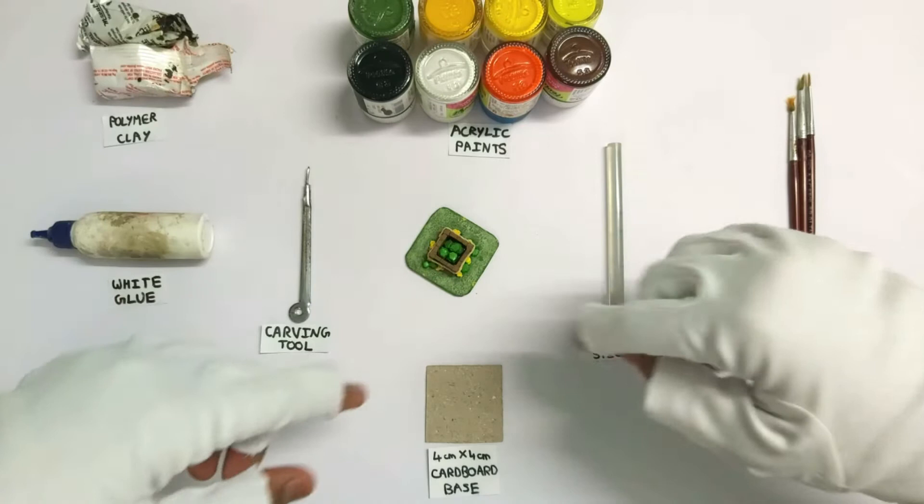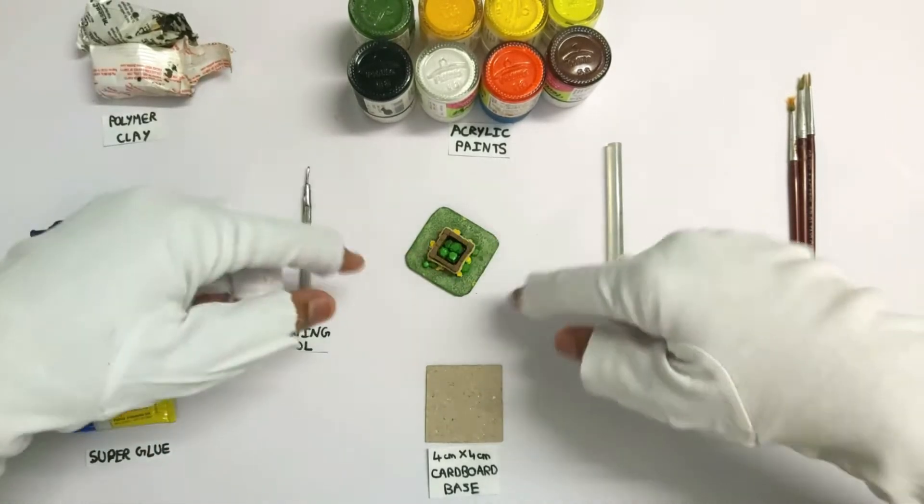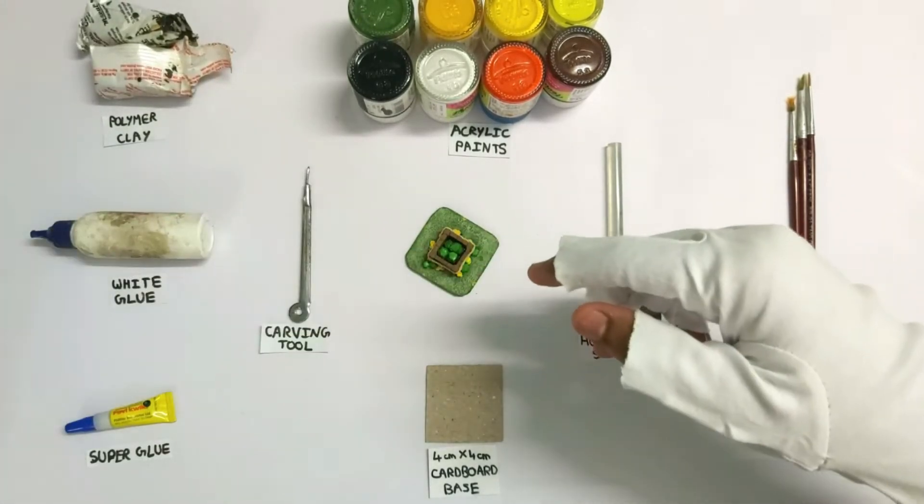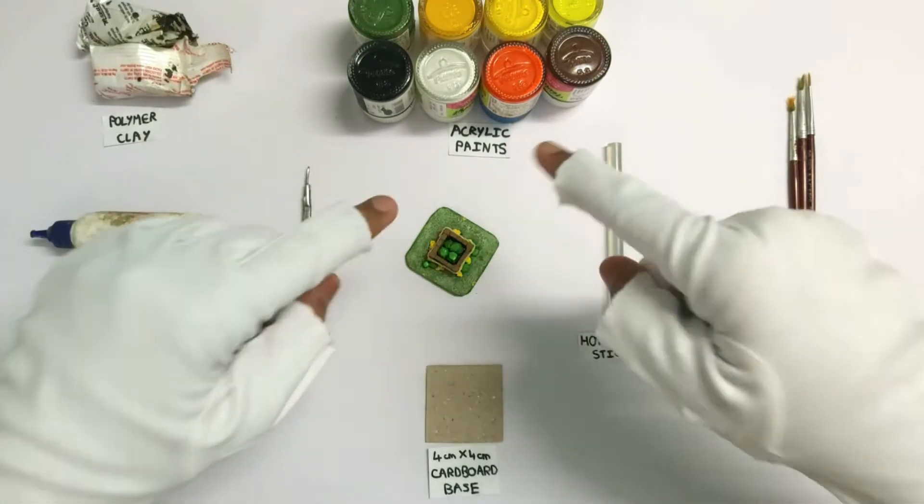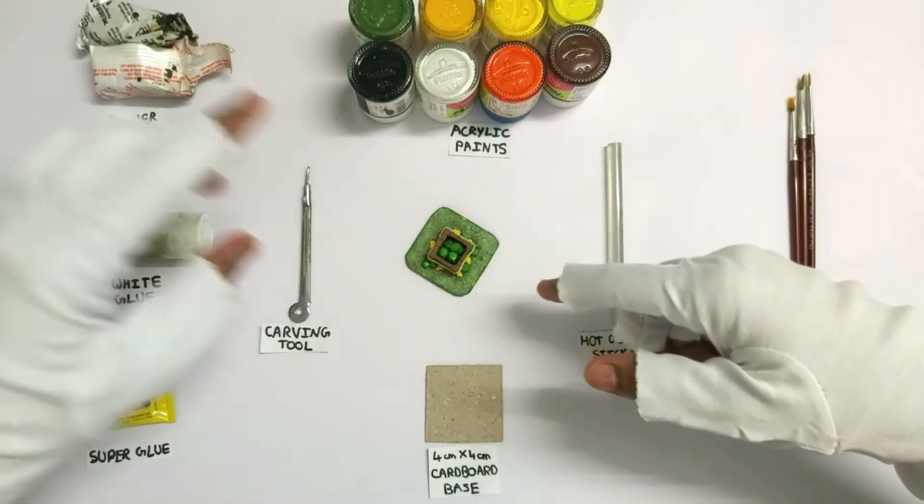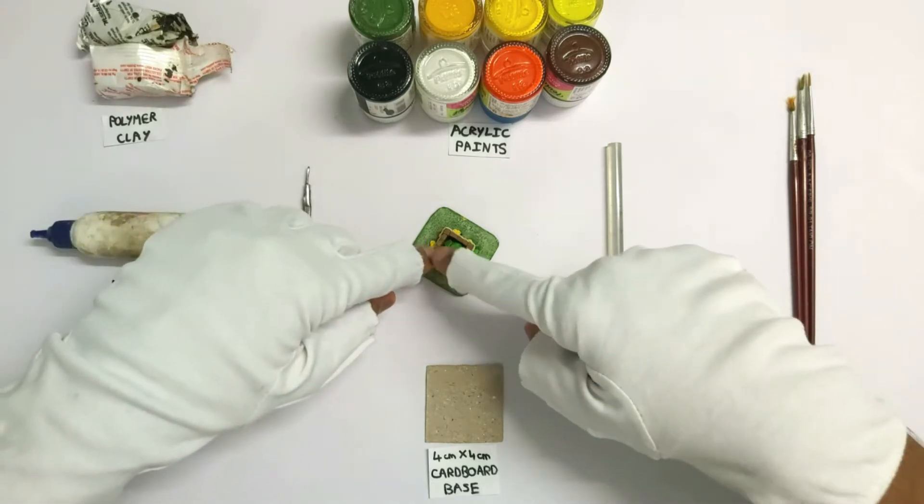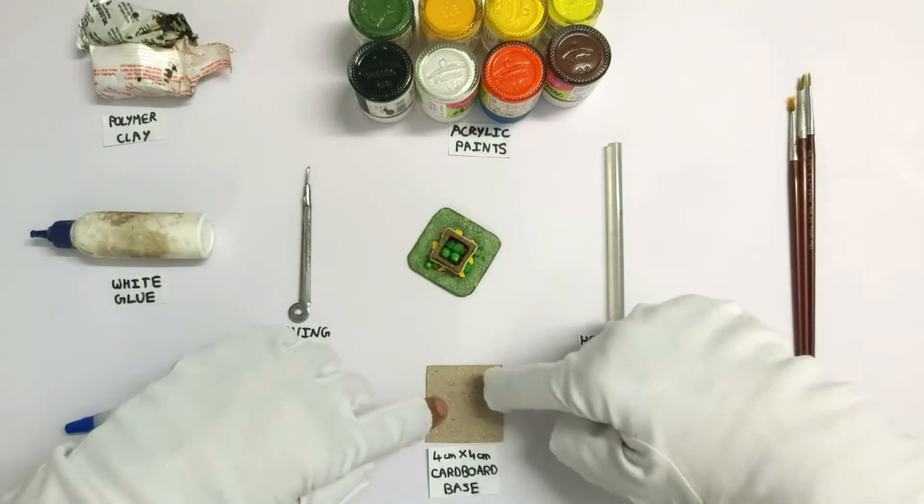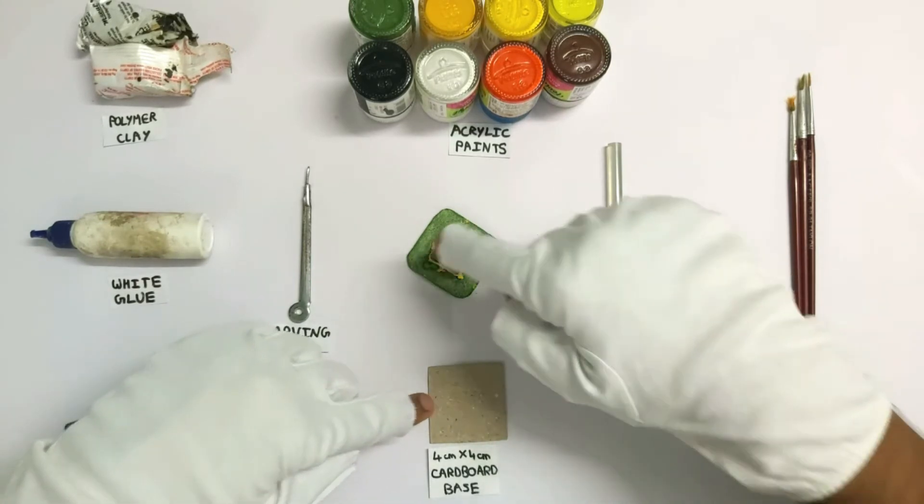These are the materials I need. The first thing is obviously polymer clay. I'm making everything with polymer clay instead of cardboard. White glue and super glue for reinforcing, paints and brushes for coloring, and then the carving tool you see is for making the small cuts and details. And then the base is obviously cardboard.